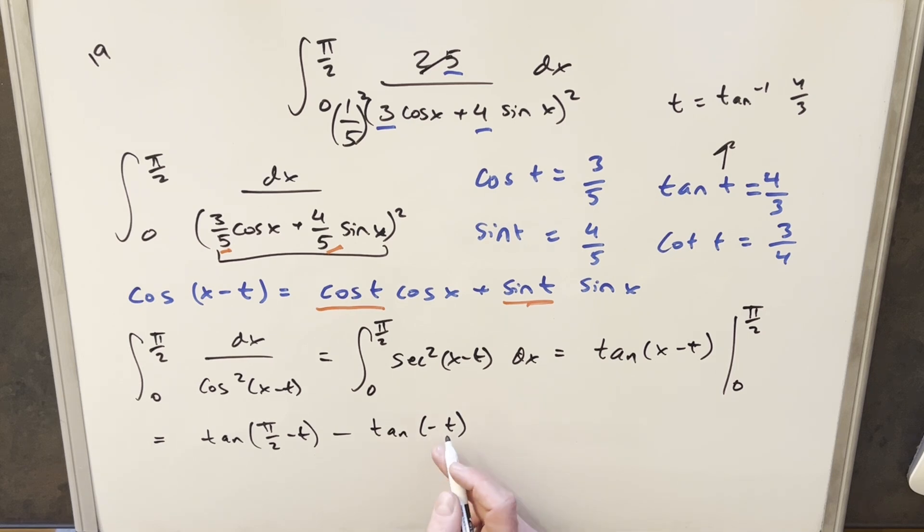But tangent's an odd function, so what I can do is take the minus out front, turn this into a plus. And then we also have a value for this because we can use the complementary angle formula. The complementary angle formula tells us that for tan pi over 2 minus t, this is just going to be cotangent of t plus tangent of t.